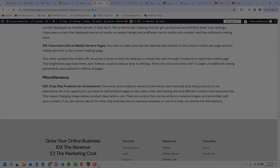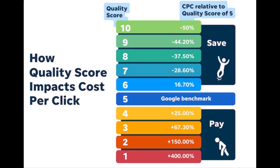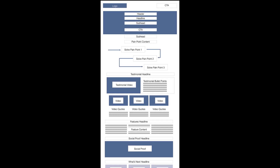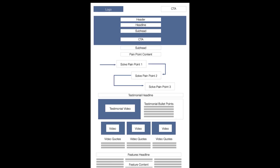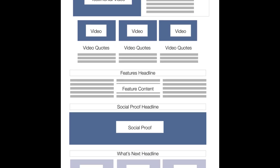Advertising platforms use a similar SEO algorithm to determine your quality score — an arbitrary score given to each page based on how it relates to the keyword. This helps advertising platforms keep irrelevant information off certain searches, but it also allows them to artificially inflate the price of a click. The code structure for this type of page is similar to the SEO structure, with a few major differences.